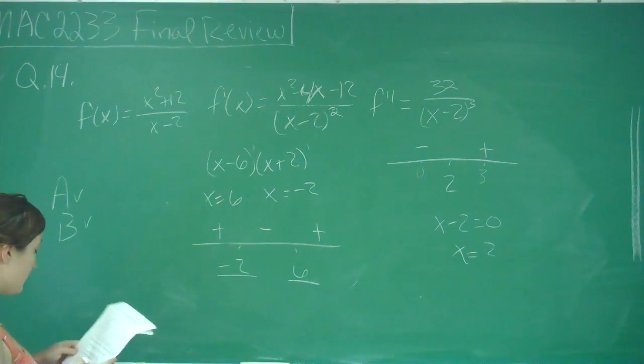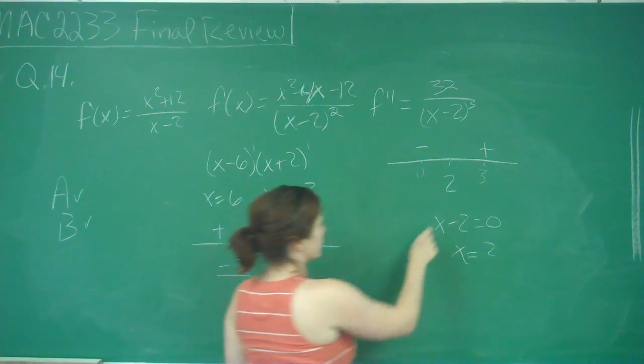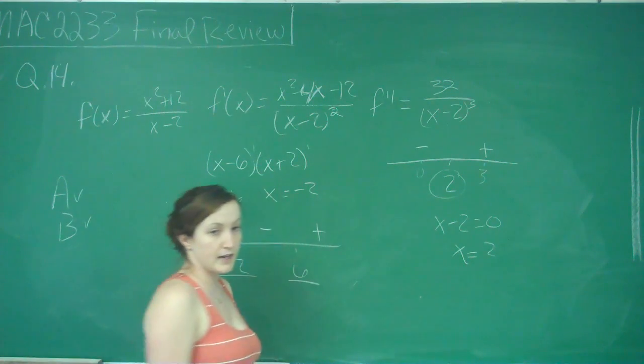And then C says f of x has an inflection point at x equals 2. Well, if we looked here and just here, we would think that that is true.